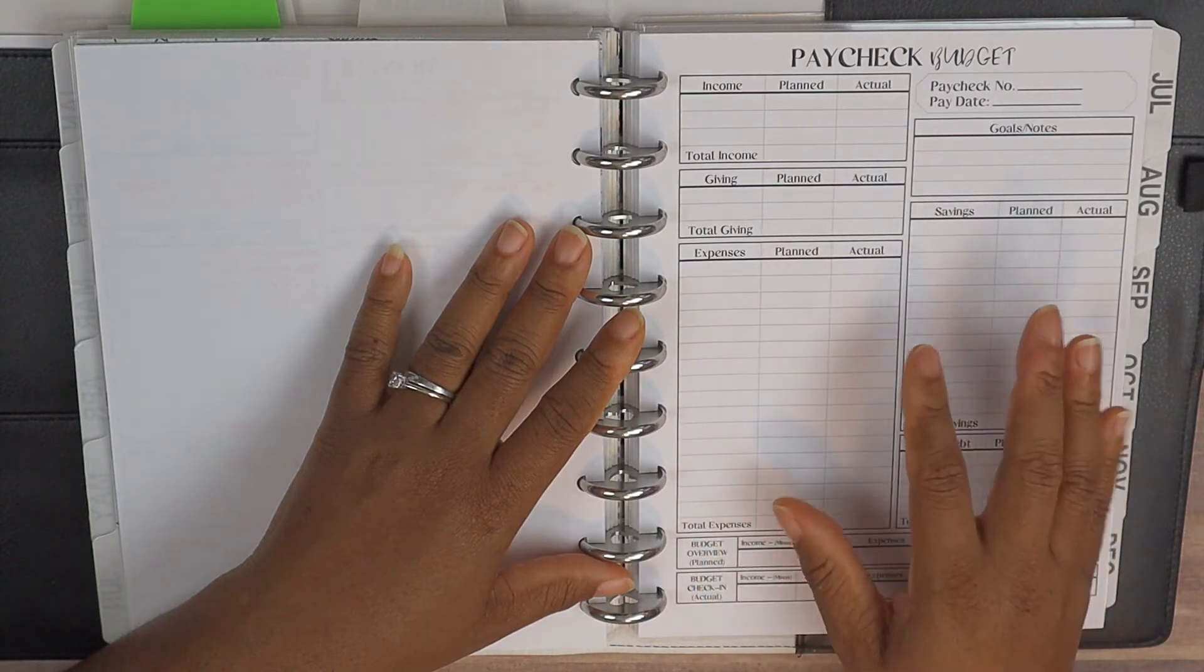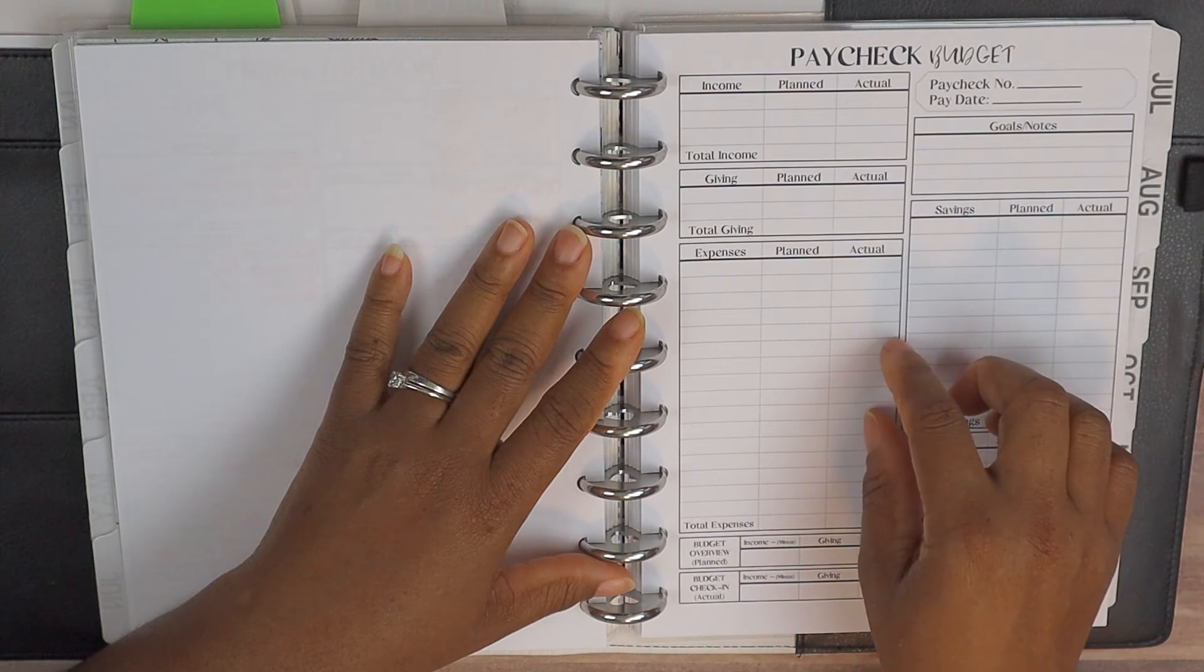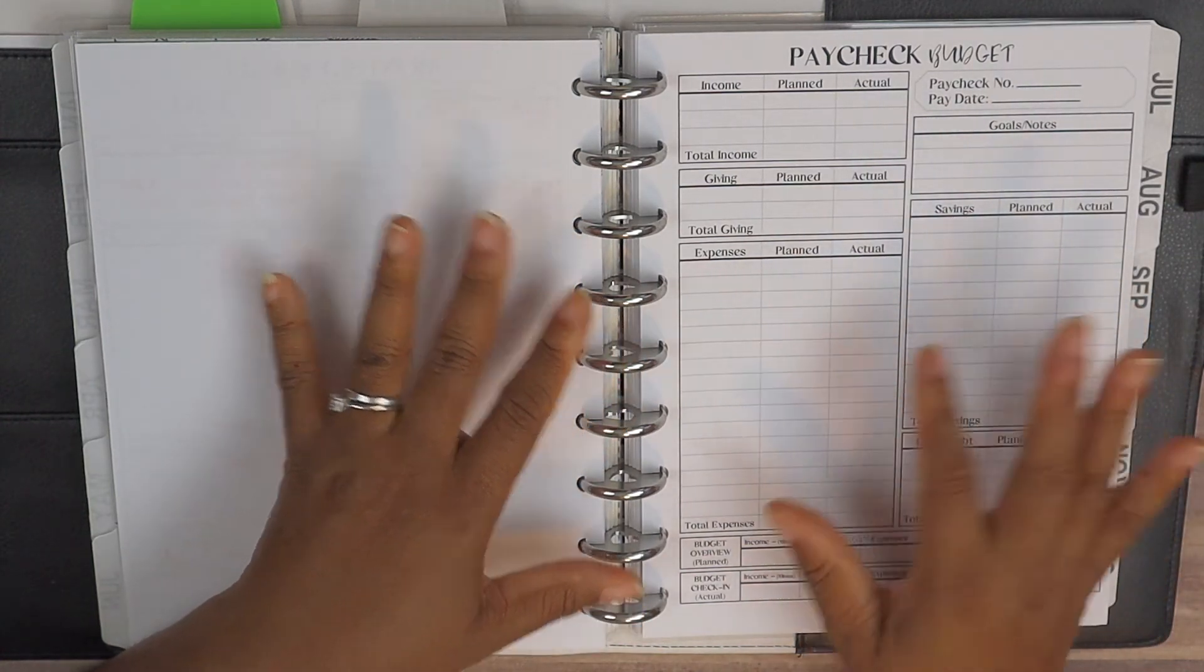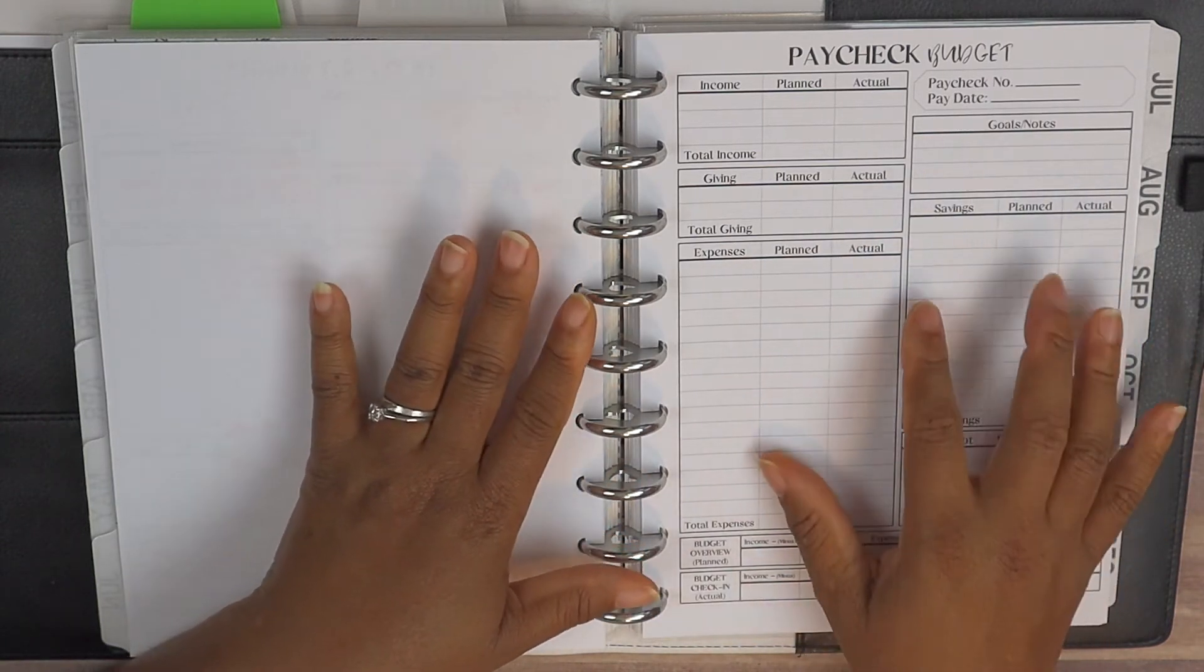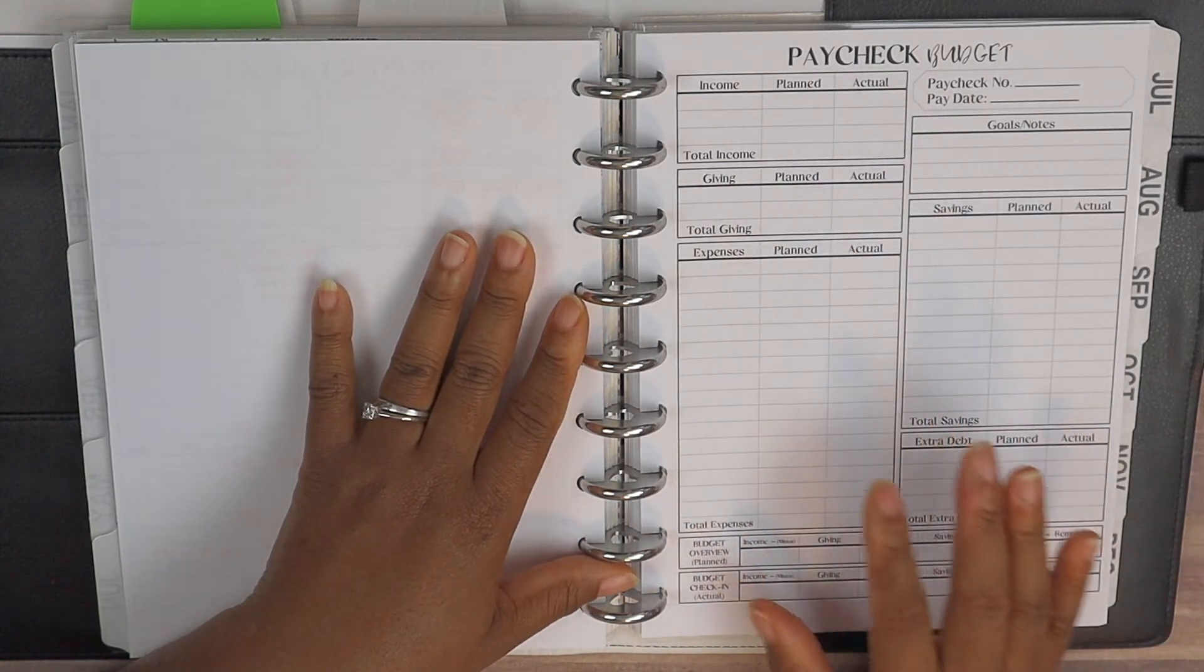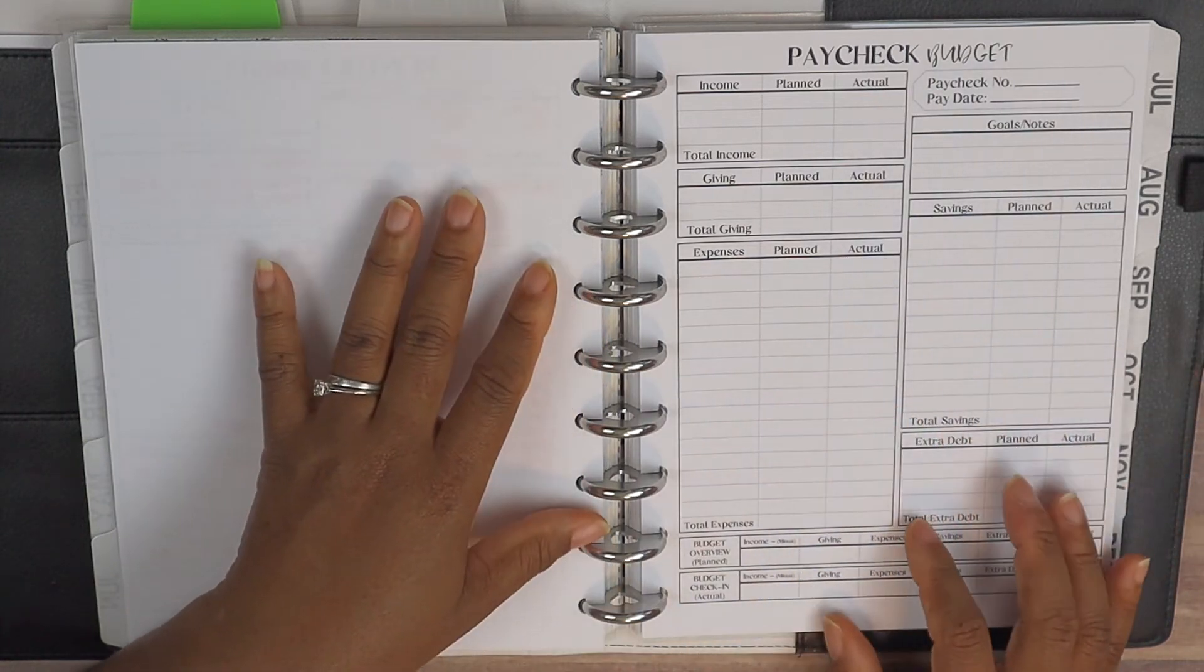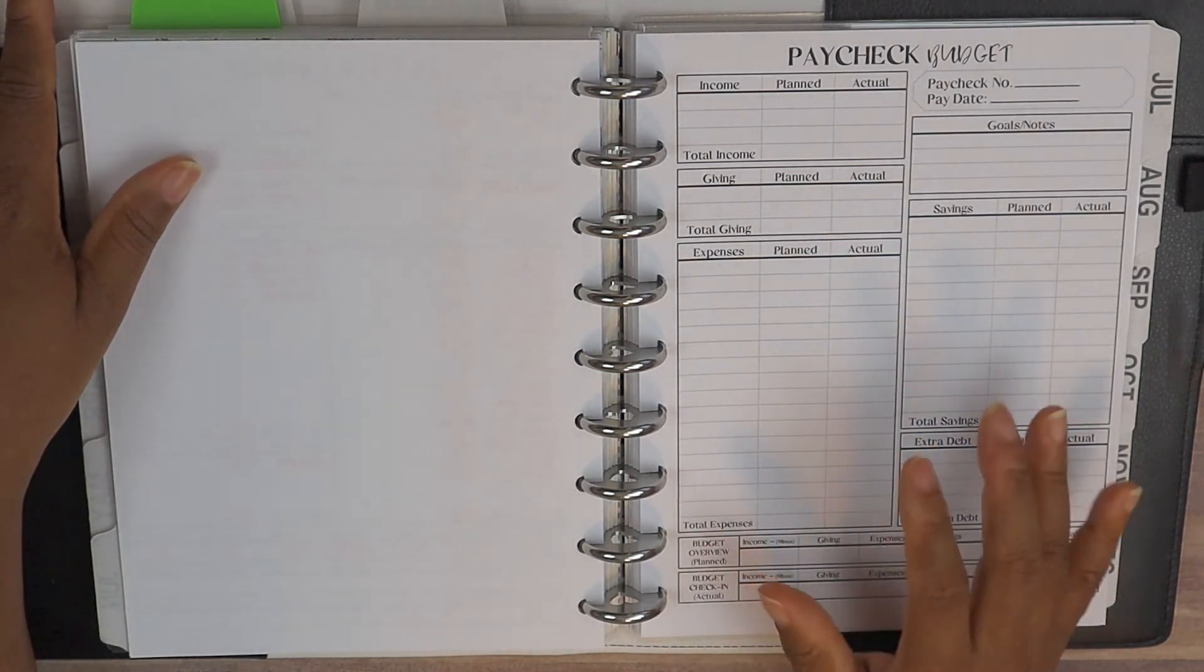Now they do have a savings section and extra debt section, and then there's another set that you can use that has the savings and cash envelope section if you use cash envelopes. We don't use cash envelopes, so we use the monthly budget and paycheck budget that only has the saving funds section on it. So I just wanted you to be aware that I do give you two different types of worksheets as part of your actual budget journal and any of the budget planner sets that I have in my Etsy shop.